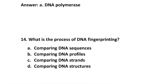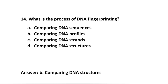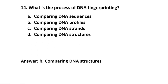Number 14: What is the process of DNA fingerprinting — what is done in it? Option A: comparing DNA sequences. B: comparing DNA profiles. C: comparing DNA strands. D: comparing DNA structures. The correct answer is option B: comparing DNA profiles. There is a mistake in the displayed options — the correct answer is B as written.